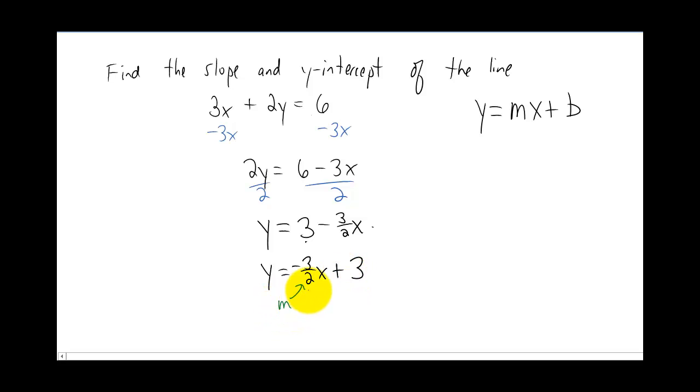Now, it's really easy to pick out that negative three halves is your slope and that your y-intercept is going to be the point zero, three. So once you have an equation in the appropriate form, this form right here, y equals mx plus b, it's really easy to find the slope and the y-intercept. The only difficulty is getting the equation into that form.